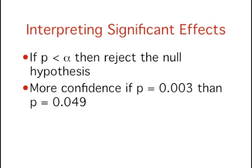For example, you should have more confidence that the null hypothesis is false if p equals 0.003 than if p equals 0.049.